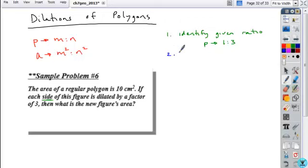Once you identify the given ratio, you're then going to apply the properties to find the necessary ratio. So in this particular problem, we want to find the new figure's area. So the ratio that we're looking for is the ratio of the corresponding areas. So if the ratio of parts was one to three, what does that mean the ratio of their corresponding areas is? One squared to three squared, or one to nine.